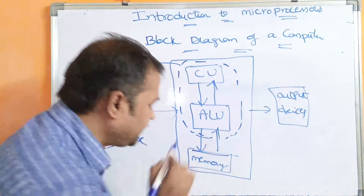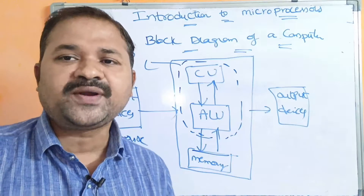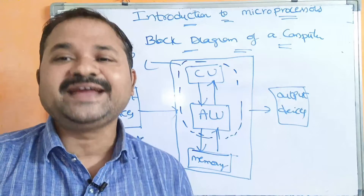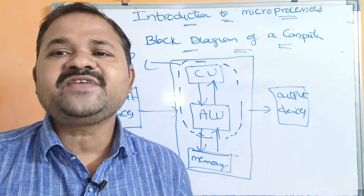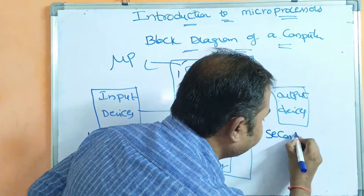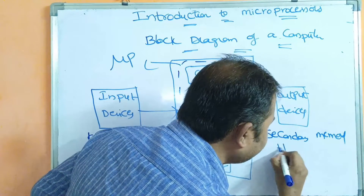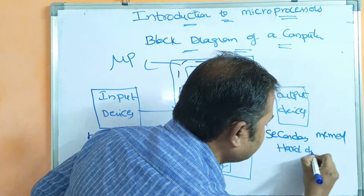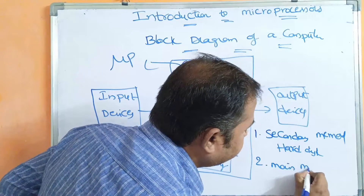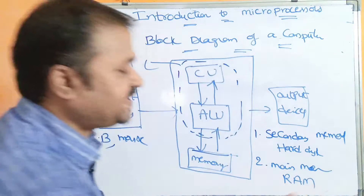Next, we have memory. Whenever we save a program, it will be stored in memory. Memory is mainly useful for storing data. We have two types of memory. The first one is secondary memory — the best example is hard disk. The second one is main memory — the best example is RAM, Random Access Memory.